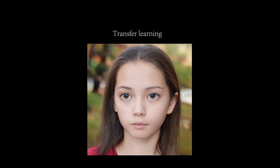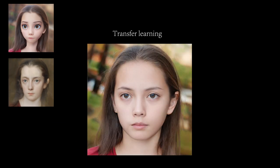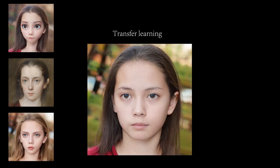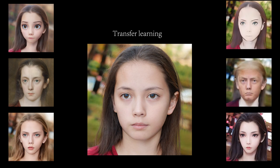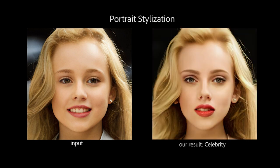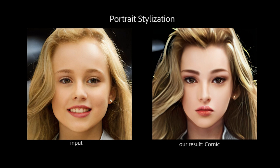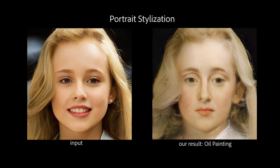For training our attribute-aware generator, we start from the pre-trained weights of StyleGAN2. We then sample latent codes from a Gaussian distribution in Z-plus space and fine-tune the generator to match our given set of style exemplars. Our approach provides much greater agility in creating high-quality and high-resolution portrait stylization models, requiring only a limited number of style exemplars and short training time.